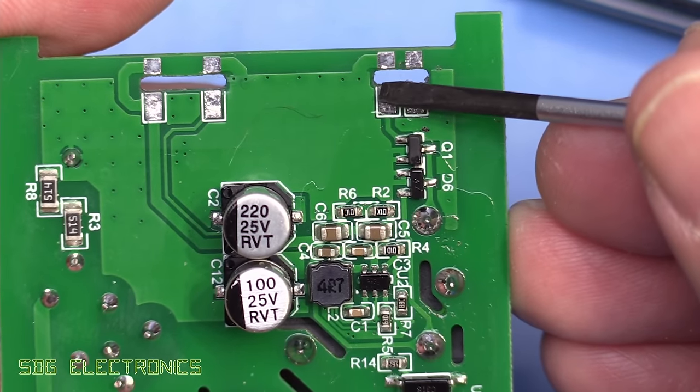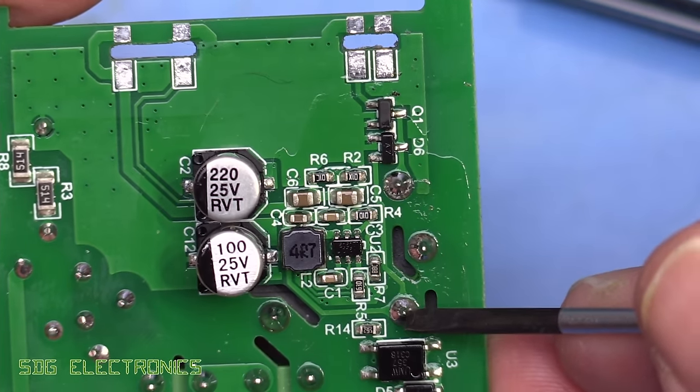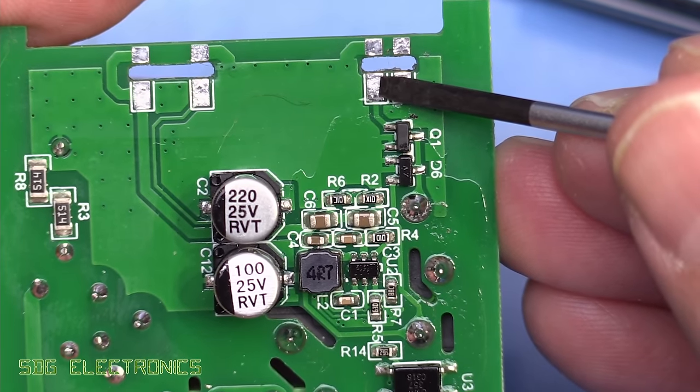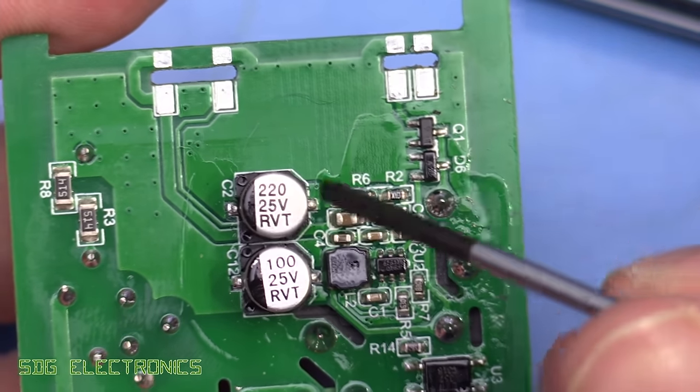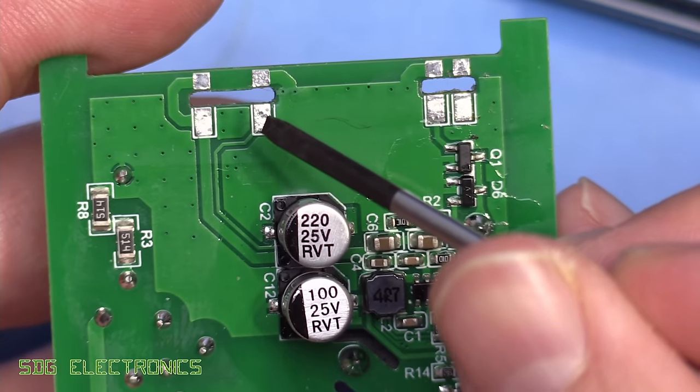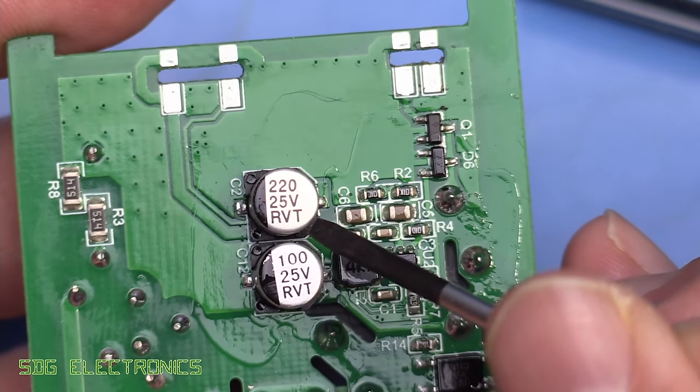I can see a trace coming from this leg that goes to Q1 and then into a diode and then into the coil. So this pin here is clearly our switch output to control the relay.